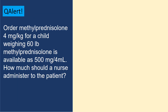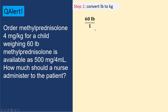Example: an order for methylprednisolone 2 milligrams per kg for a child weighing 60 pounds. Methylprednisolone is available as 500 milligrams per 4 mLs. Step one: convert pounds to kilograms — set up dimensional analysis: 60 pounds with 1 kg equal to 2.2 pounds. Cancel out pounds, giving 60 divided by 2.2, which equals 27.2 kilograms.